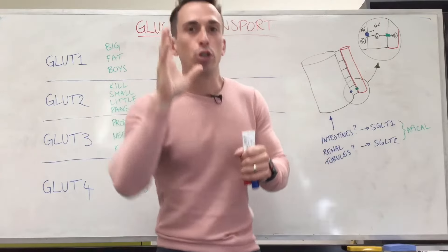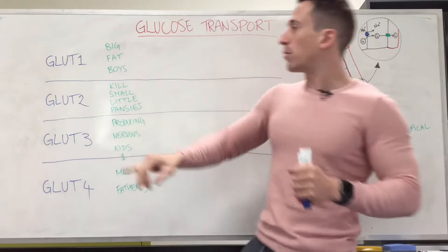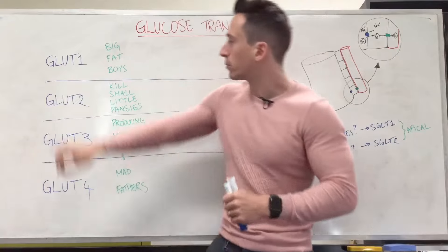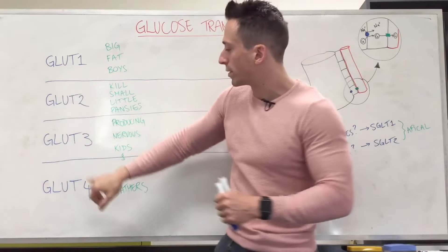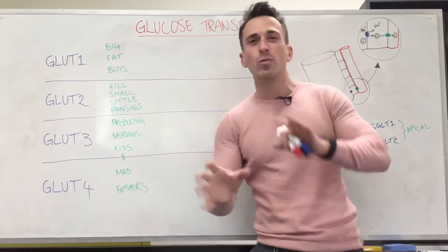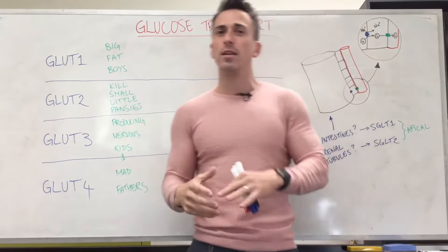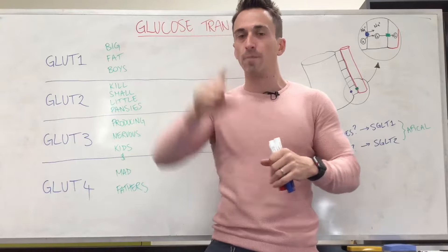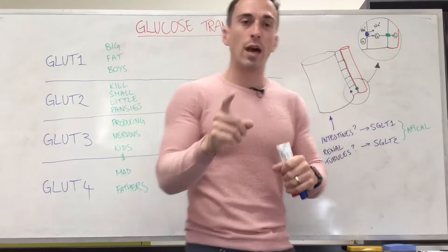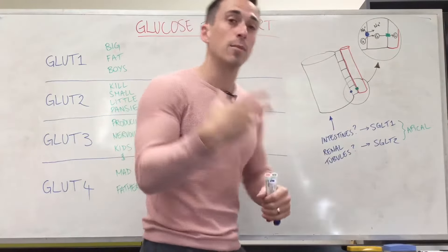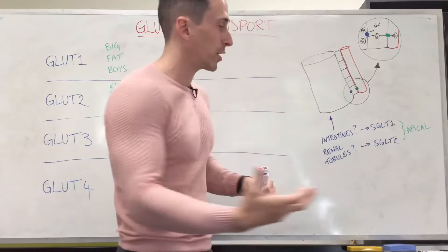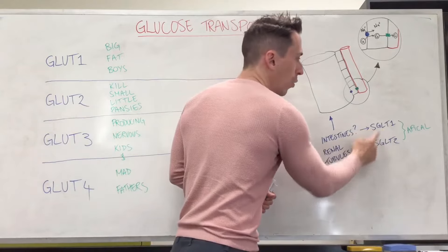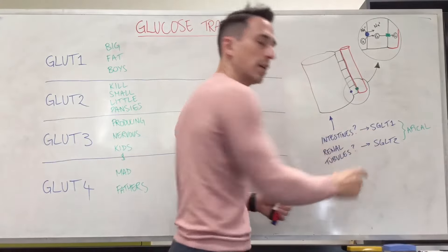Predominantly at the tissues, the transport molecules are called GLUTs, and I'm going to go through GLUT-1 to GLUT-4. There are around 13 different GLUT transporters you should be aware of. But before we do that, we need to talk about some other glucose transporters called SGLT1 and SGLT2.